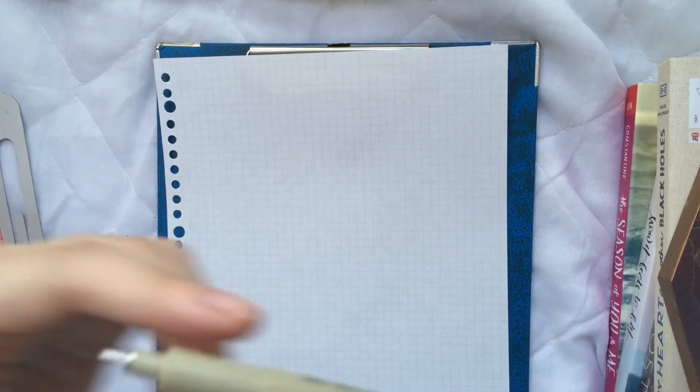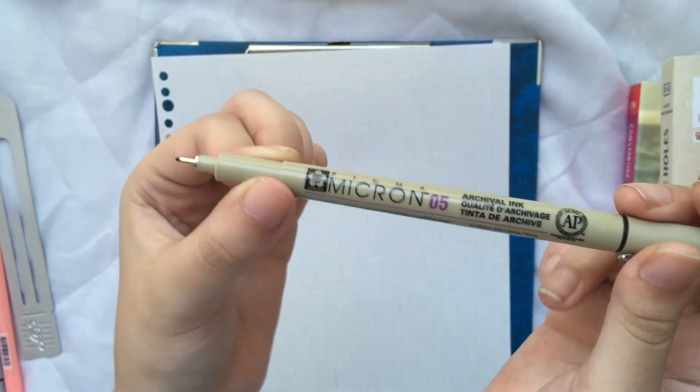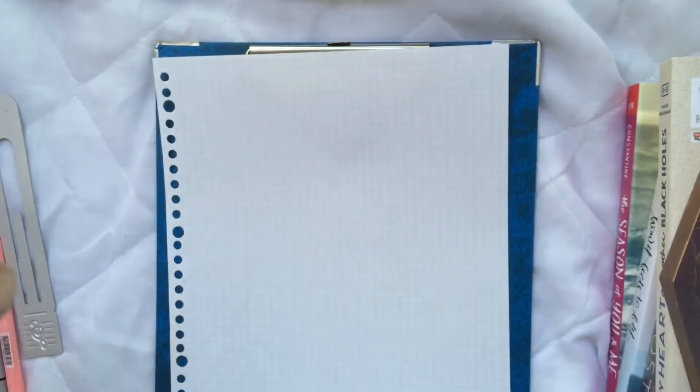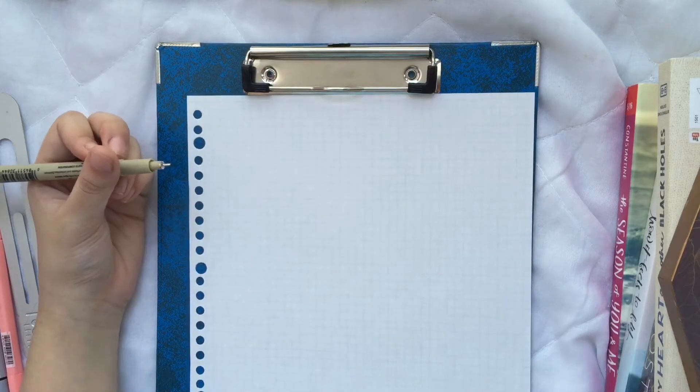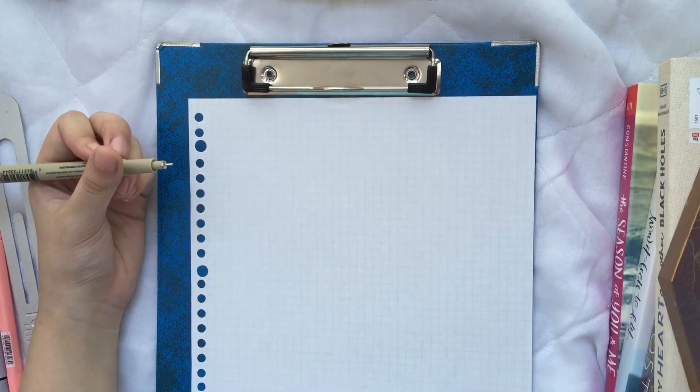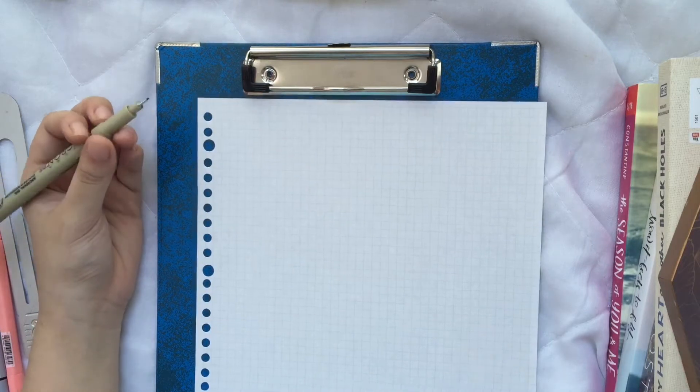And for today, I would be using the Micron 0.5 pen so you guys can see what I'm writing better. So first and foremost, let's start with some bullets that you can use to spice up your notes or your bullet journals.